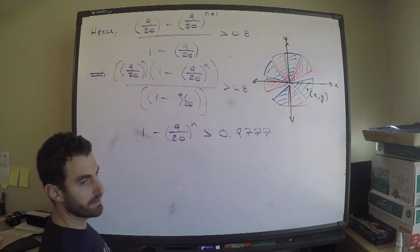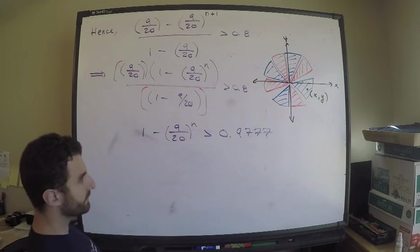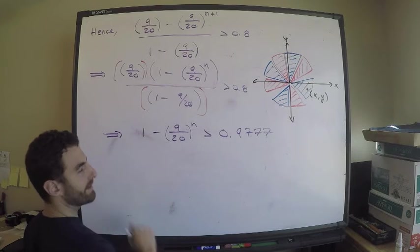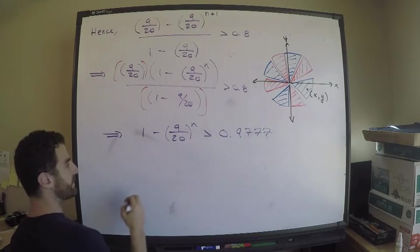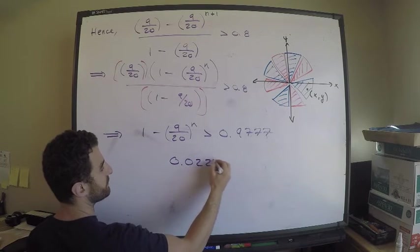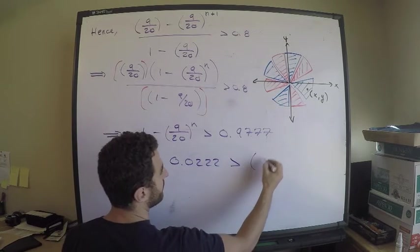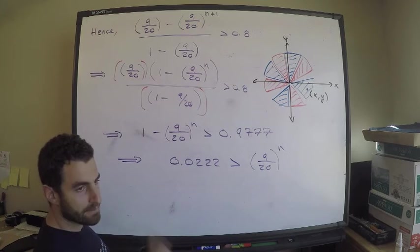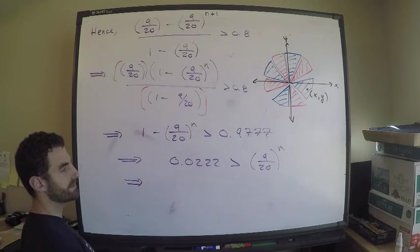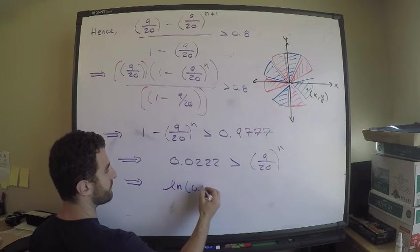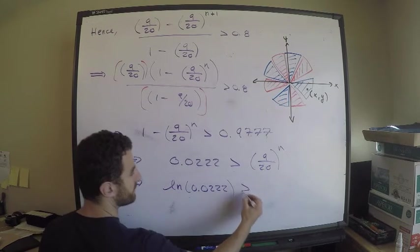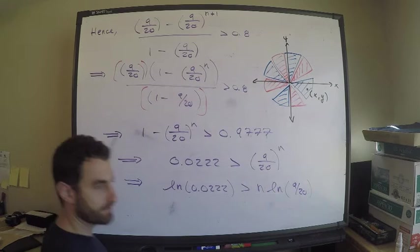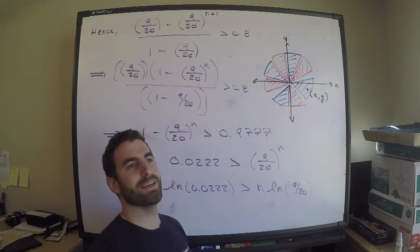There's one other thing I'm going to go through - a common trap. This will screw you up royally if you don't do this properly. Beware: this is an inequality. Equivalently, I bring this expression to the other side and get 0.0222... greater than 9 over 20 to the n. I need to take ln of both sides. ln(0.022) is greater than n times ln(9/20).